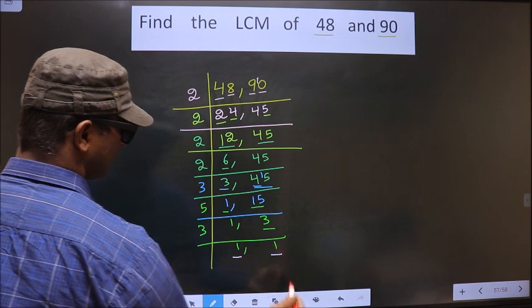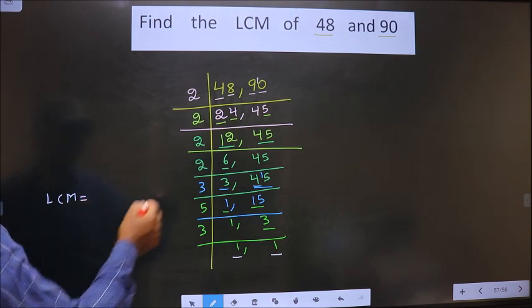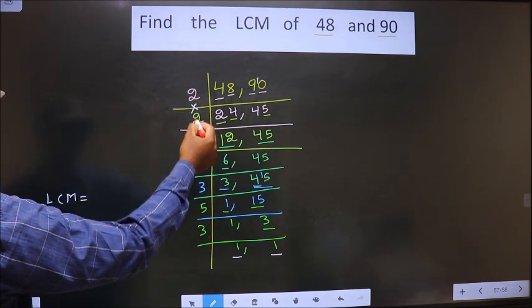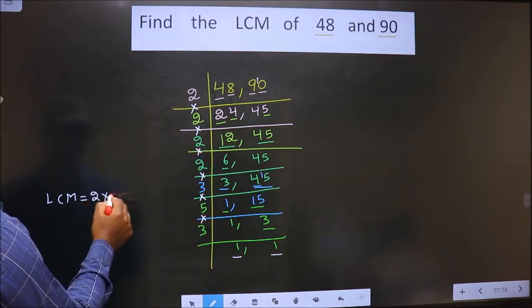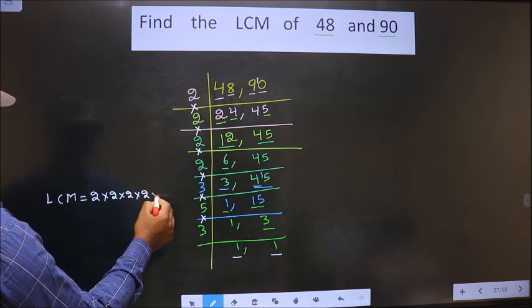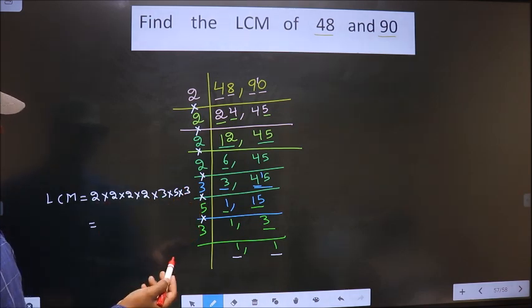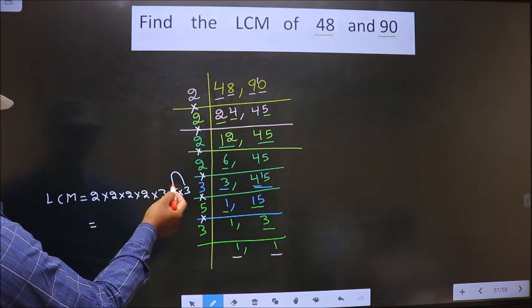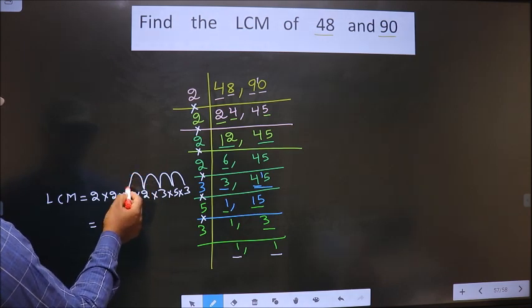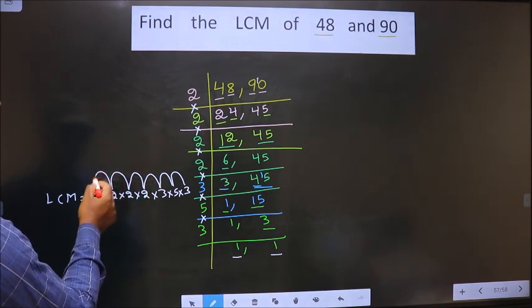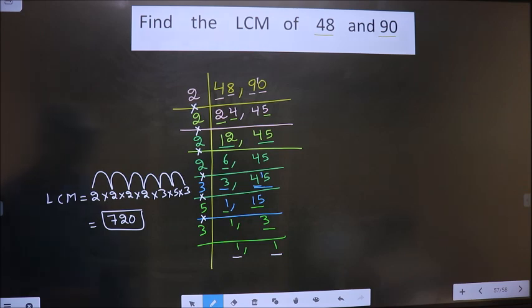Now we got 1 in both places. Our LCM is the product of these numbers: 2 times 2 times 2 times 2 times 3 times 5 times 3. Let us multiply all these numbers: 3 times 5 is 15, 15 times 3 is 45, 45 times 2 is 90, 90 times 2 is 180, 180 times 2 is 360, 360 times 2 is 720. So 720 is our answer.